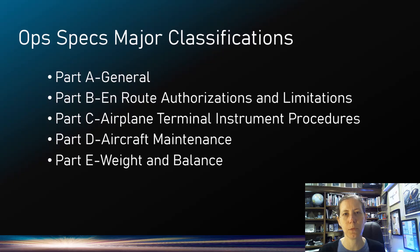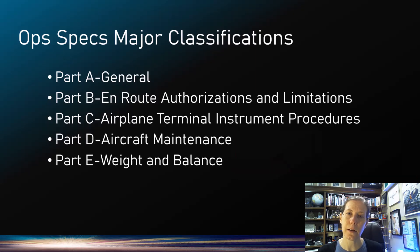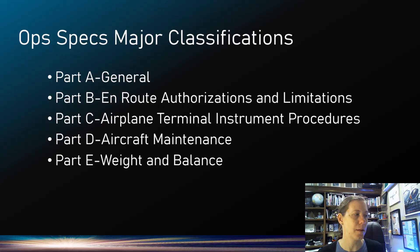Now let's talk about the major classifications of ops specs. A is general. B is en route — things you're going to do en route. C covers a lot about takeoff, landing, and terminal operations. D is all about how you're going to do your maintenance. And E is specific to weight and balance.